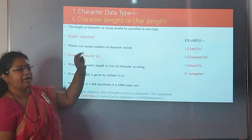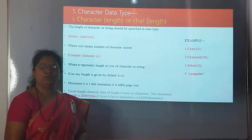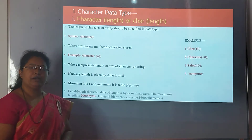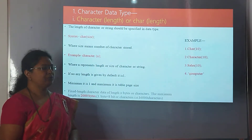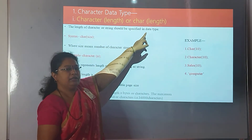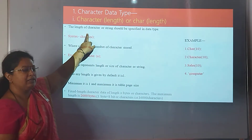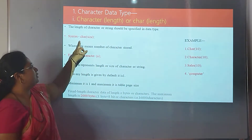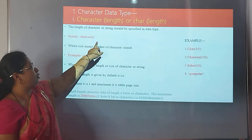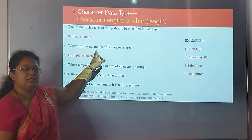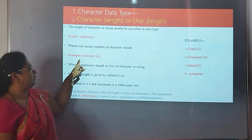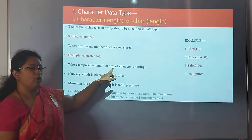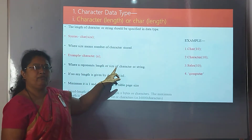The first data type is the character data type. The character data type is used to store character data into a variable in the database. The character data type is again subdivided into some subtypes. The first sub type is CHAR(length). The CHAR data type is used to store characters into a particular variable. The syntax is CHAR(size), where size means the number of characters stored in a particular variable. For example, CHAR(n) where n means the length or size of the character or string stored in variable i.